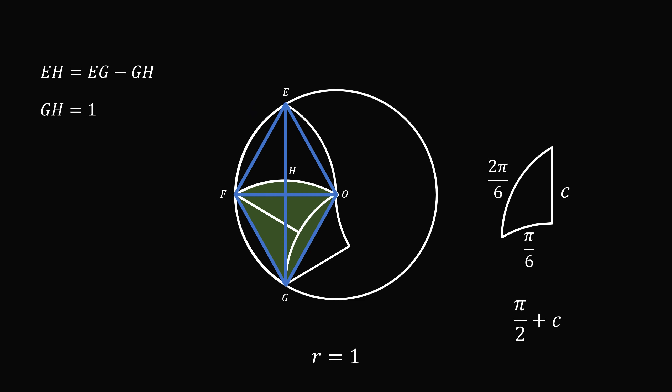and since we know the arc fe is equal to 2π over 6 or π over 3, we have a central angle foe that's equal to π over 3 or 60 degrees.